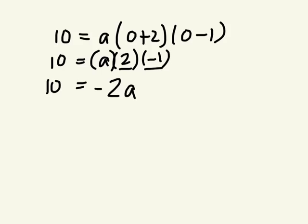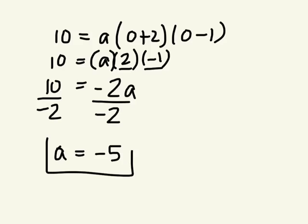I'm just rewriting it. The order doesn't matter. How do I isolate a? Divide by negative 2. A equals negative 5.